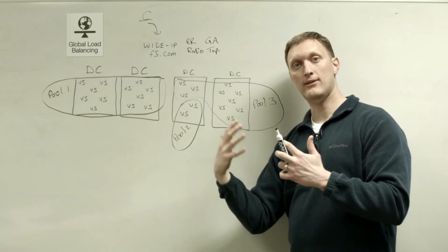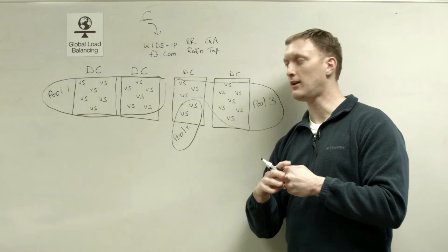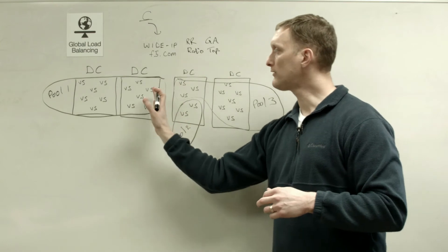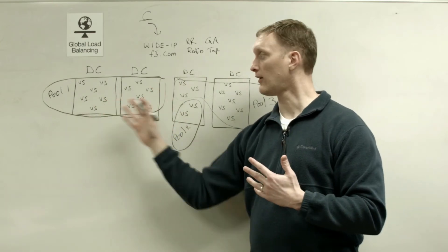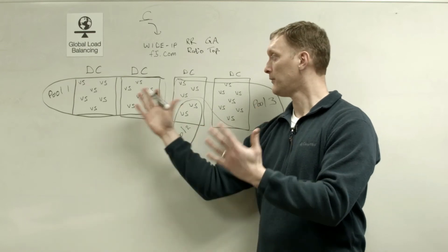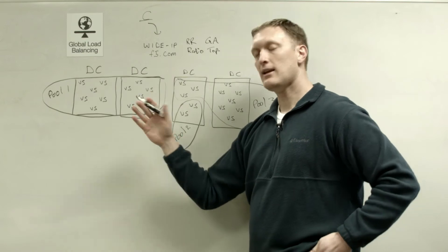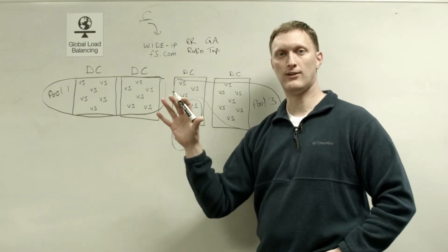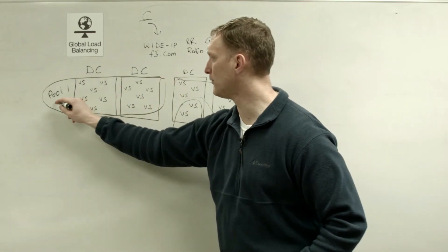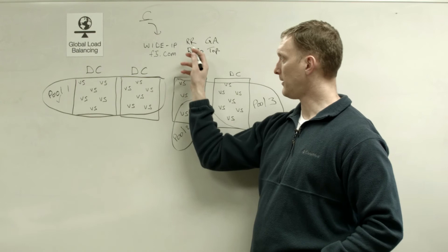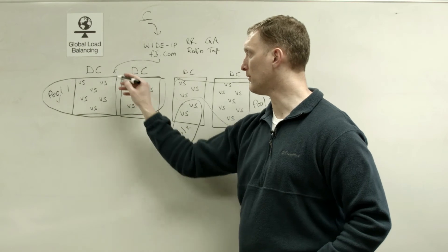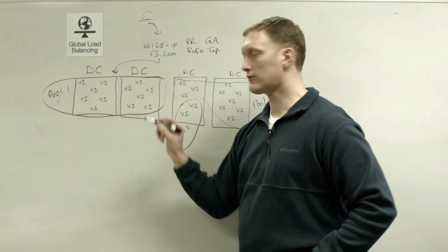And so what we want to start talking about now in this series of Whiteboard Wednesday videos is now that we're in the pool based on these load balancing algorithms, which virtual server do we select? Because you can see there's a whole bunch of virtual servers potentially within that pool. And so the question is, which one of them are we going to select? And so I wanted to introduce the concept of some different options that exist within the pool. So let's say, for example, we've chosen pool number one here. And so based on this load balancing, the client request comes in, we've come over here from the wide IP to this pool, and we need to know which virtual server to select.